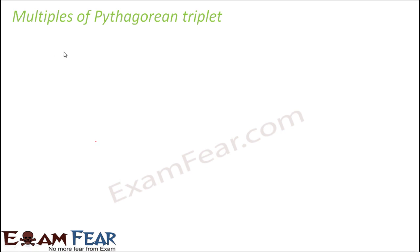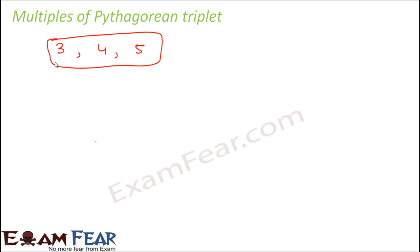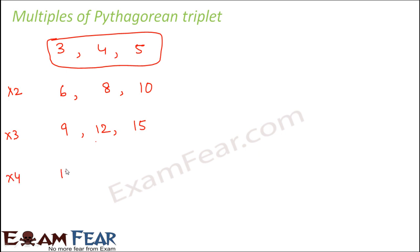Now let's look at what happens with multiples of a Pythagorean triplet. Take 3, 4, 5 — we know this is a Pythagorean triplet. If you multiply each member by 2 you get 6, 8, 10 — which is also a Pythagorean triplet. Multiply by 3 and you get 9, 12, 15 — also a Pythagorean triplet. Multiply by 4 and you get 12, 16, 20 — again a Pythagorean triplet.